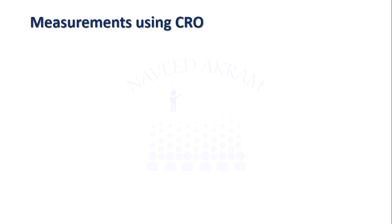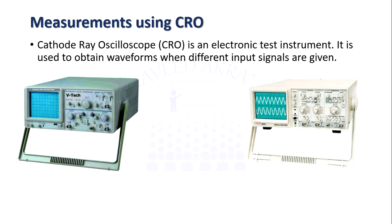The first thing you need to know is what is a cathode ray oscilloscope. Cathode ray oscilloscope, abbreviated as CRO, is an electronic test instrument which is used to obtain waveforms of different input signals — different input voltages. If we want the waveform of any voltage, we input it into the CRO, and the waveform is displayed on the CRO screen.